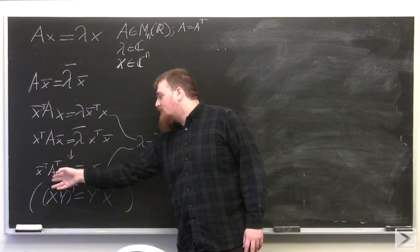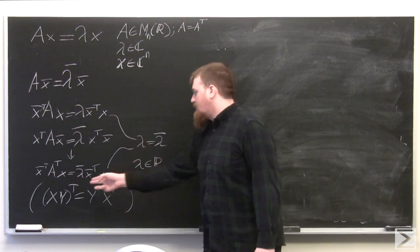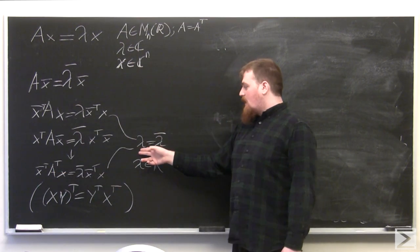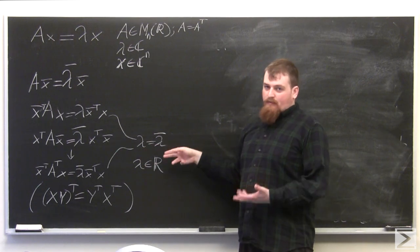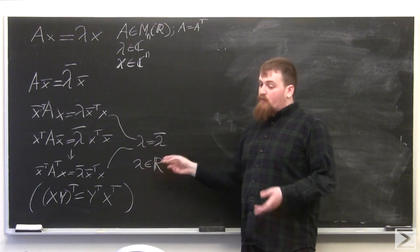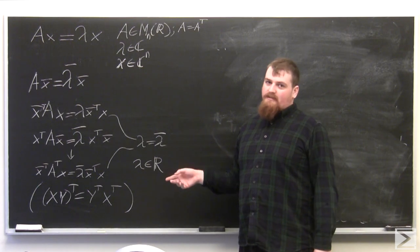And since A transpose is equal to A, this is the same as this, so this has to be the same as this, and the only difference is lambda equaling lambda bar now, and therefore lambda has to be real since it's its own complex conjugate.